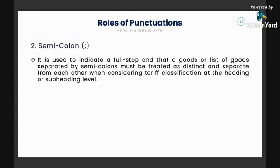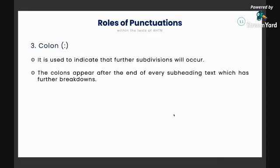For the semicolon, it is used to indicate a full stop, and a good or list of goods separated by semicolons must be treated as distinct and separate from each other when considering tariff classification at the heading or subheading level. Third, the colon is used to indicate that further subdivisions will occur, and colons appear after the end of every subheading text which has further breakdowns.